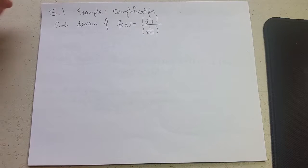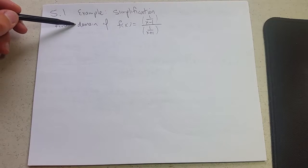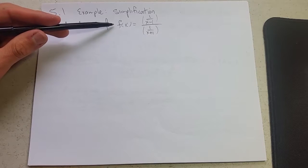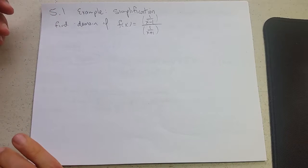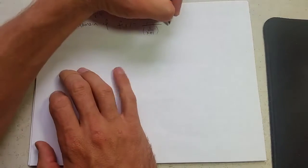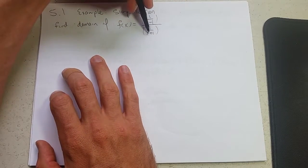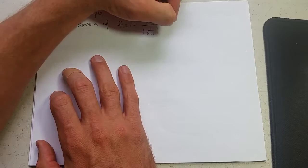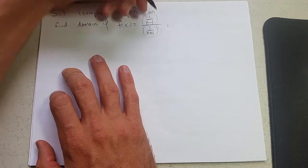Now we're going to look at a simplification example, finding the domain. So if this is your function right here after composition, I'm going to do some simplification. Fraction of fractions right here, you can multiply by the reciprocal of the denominator.